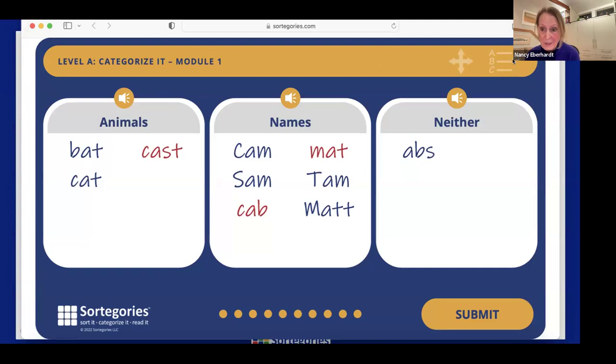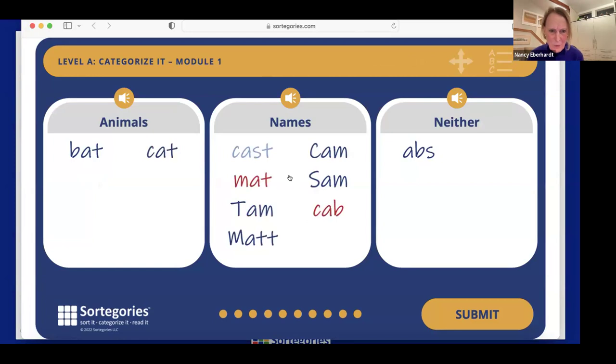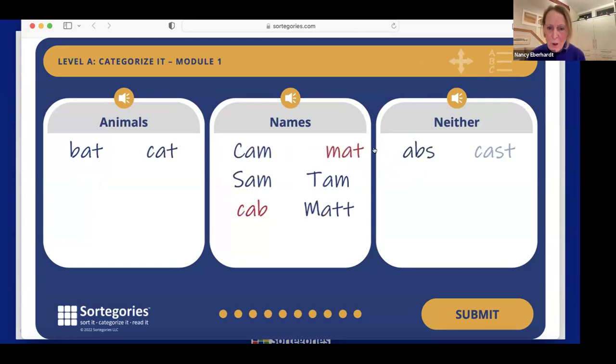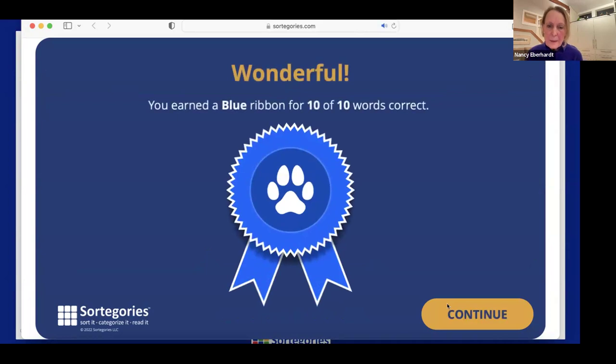So the glossary is designed to help provide that semantic layer of knowledge that some students will need. And in some cases, it might be desirable before students do the sort to actually go through the glossary and talk about the meanings of the words. This is not a gotcha game. It's really to help the students learn the meaning. So now that I've straightened out this meaning, this is not 'cats.' It's 'cast.' So I'm going to move it over here. And then this is the wrong kind of 'mat.' And 'cab' is not a name. Now I hit submit. Great job. All 10 words are correct.